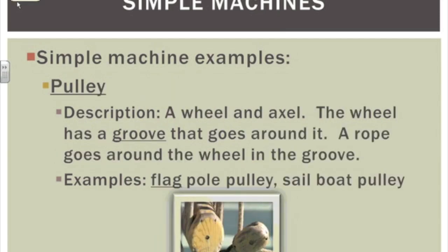A pulley is a wheel with a groove, and you have a rope that goes around the wheel. It changes the direction of the force. The best example is a flagpole — it's much easier to attach the flag at the bottom of the pole, stand on the ground, and pull the rope down while the flag goes up, versus trying to climb the flagpole to attach the flag at the top. That's a pulley.